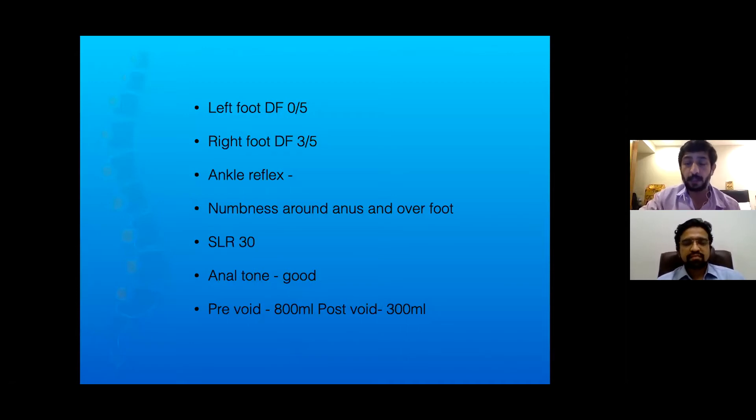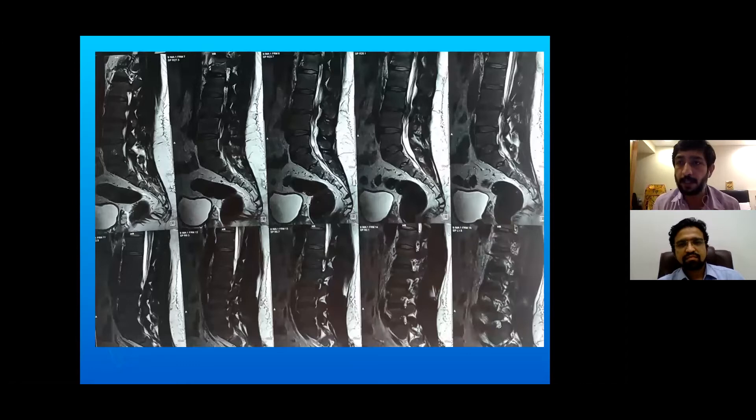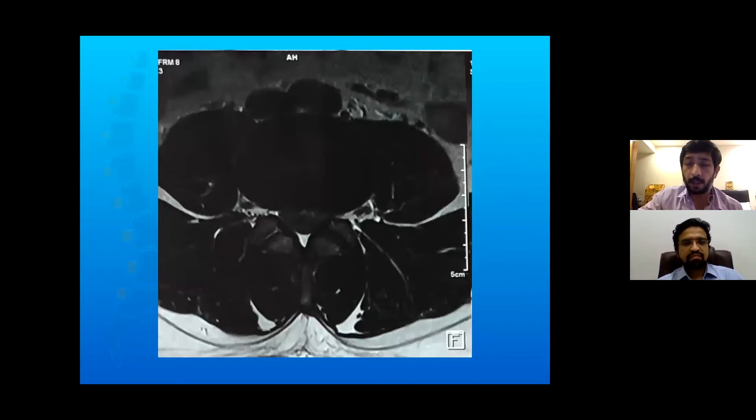He had some numbness around his anus and over the foot. However, the anal tone was good. SLR on the left side was 30. And on doing a pre-void and post-void, there was 300 ml of post-void urine. So it's not typically a complete cauda equina with retention, but obviously he had some symptoms of urinary incontinence. This was 15 days with complete left-sided foot drop, Manish.